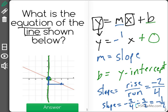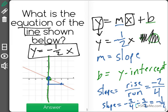So now we know y equals negative 1 half x plus 0. And actually, we don't even have to say plus 0 because that holds no value. We could just say y equals negative 1 half x for the correct answer.